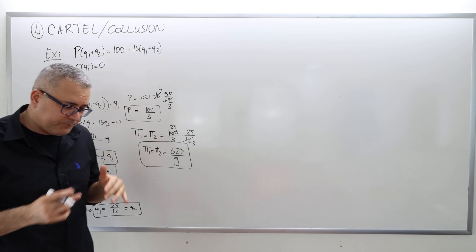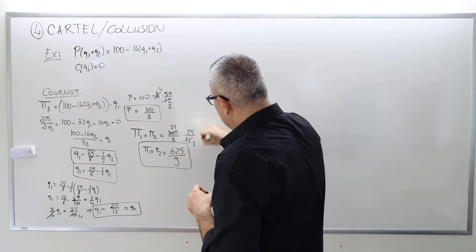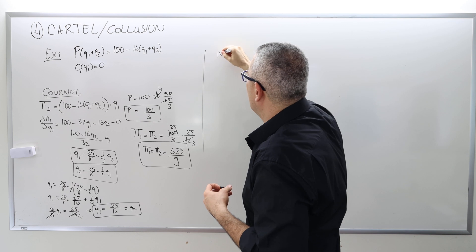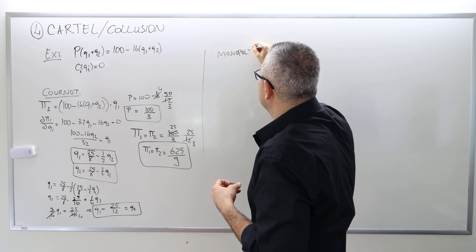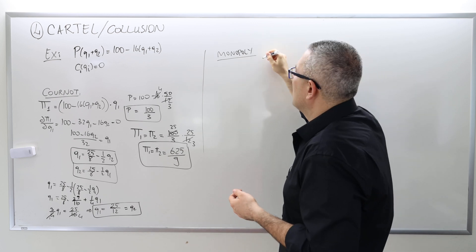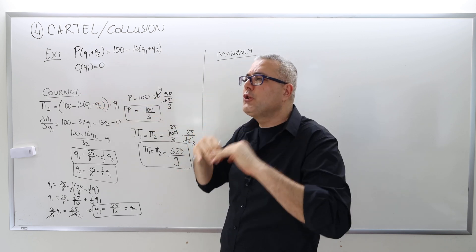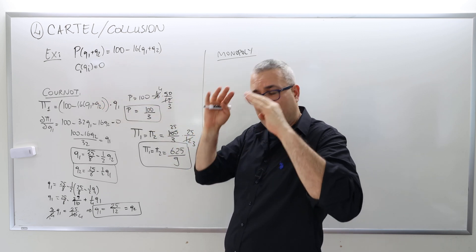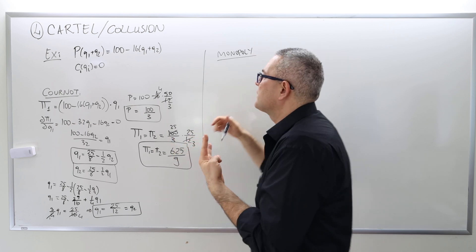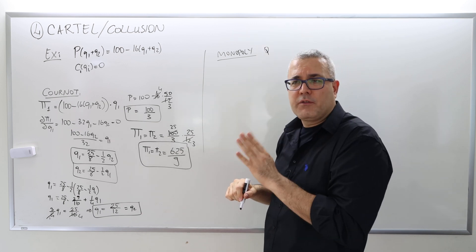If they compete in Cournot fashion, that's one outcome. But what if they form a cartel and act like a monopoly? That means they cooperatively choose their production. They agree: we'll fix some total quantity Q — you produce half, I produce half. That's the deal.